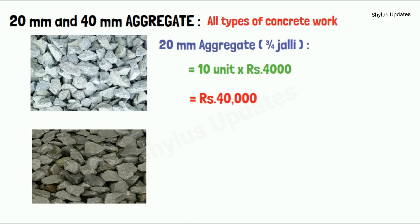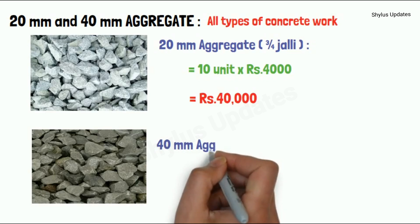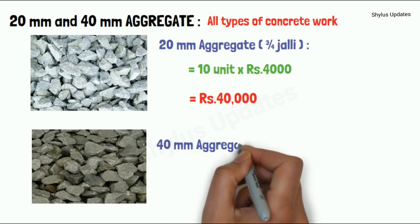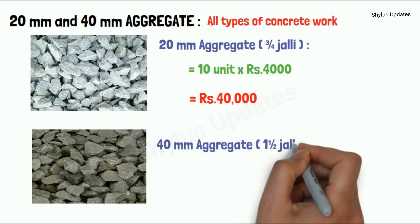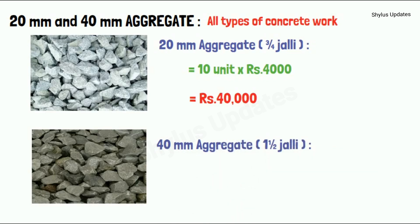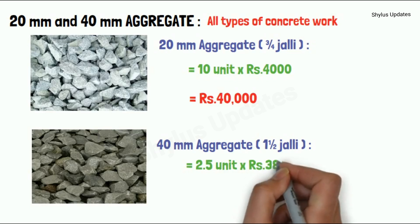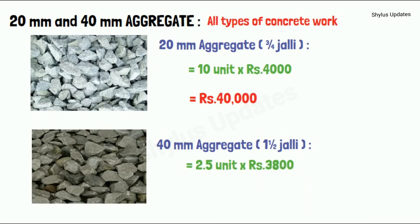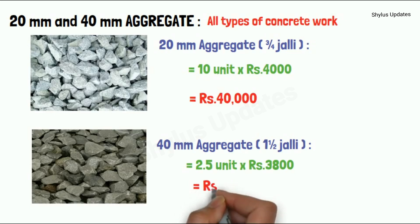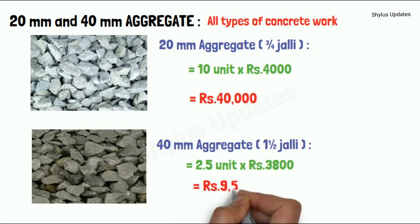40 mm aggregate. For a 700 square feet house, 2.5 units of 40 mm aggregate is required. The current market rate of 40 mm aggregate is Rs. 3,800 per unit. When you multiply 2.5 units into Rs. 3,800, you get Rs. 9,500.